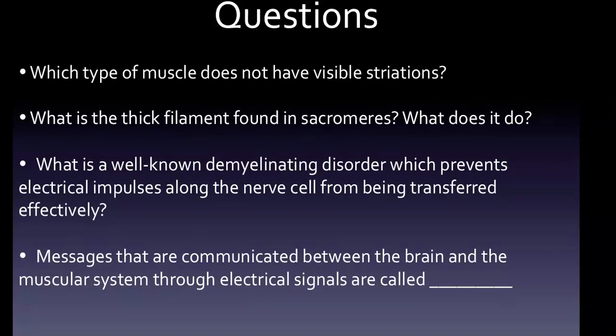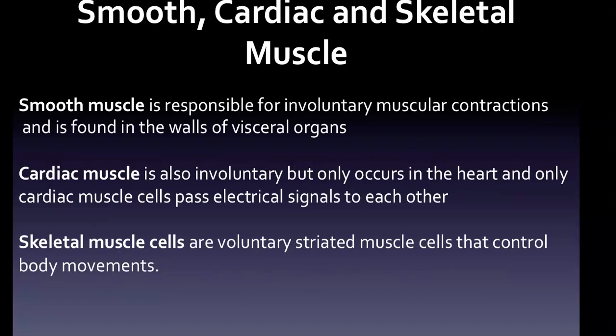Smooth muscle is the answer to the striation question. Cardiac muscle is also involuntary but occurs only in the heart, and only cardiac muscle cells pass electrical signals to each other. Skeletal muscle cells are the voluntary ones — they are voluntary, striated muscle cells that control body movements.